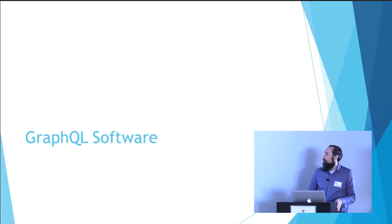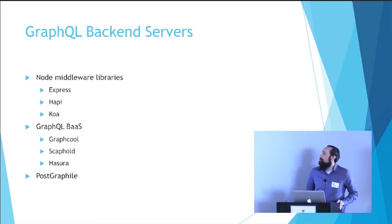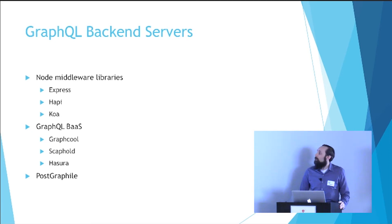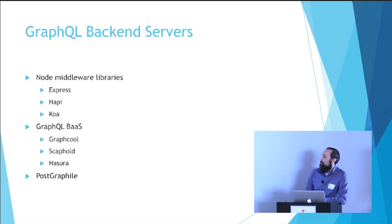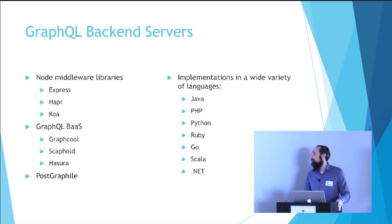So let's talk a little bit about GraphQL software, starting with back-end software. From the JavaScript arena, there is Apollo GraphQL, which is a Node middleware library for Express, Hapi, Koa, and various other frameworks. There are also a few GraphQL back-end-as-a-service providers — the most popular one being Scaffold, and Hasura, which just recently started supporting GraphQL. PostGraphile is the one I tend to use most often. There are other implementations in a wide variety of languages — if you don't want to write a JavaScript back end, you can choose pretty much any modern language to create a GraphQL back end.